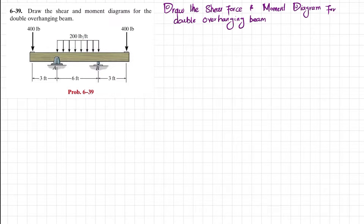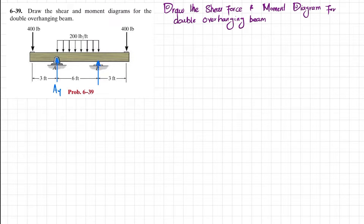We will draw the shear force and bending moment diagram. Let's start with the solution. First step: if we remove the pin support at point A there will be a reaction force represented as Ay, and if we remove the roller support at point B you will have a reaction force By. First we will find these unknown forces.